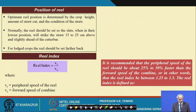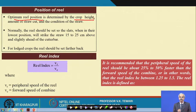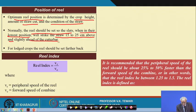The optimum reel position is determined by crop height, the amount of straw cut, and the condition of the straw. Depending on crop variety — short duration or tall — you position the reel accordingly. Normally, the reel should be set so that in its lowest position it strikes at least 15 to 25 centimeters above and slightly ahead of the cutter bar, ensuring the crop height is properly accounted for.